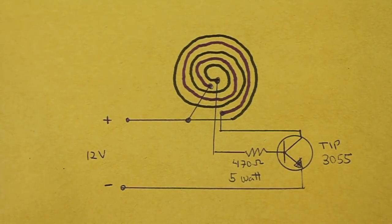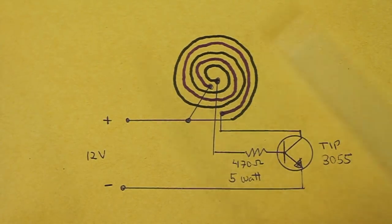This is the diagram. It is very easy to build. It only needs a coil made of two conductor cable, a resistor and one transistor with heat sink.